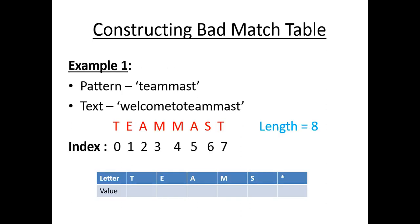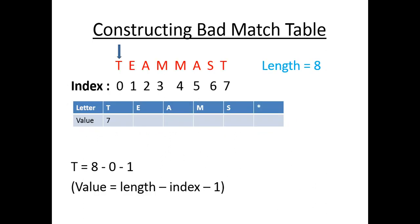Suppose we are given the text 'welcome to team mast' and the pattern to be found is 'team mast'. We write the index corresponding to every character of the pattern, starting with index 0. Also remember, we don't repeat letters in the table — letters which occur more than once in a pattern are written only once.